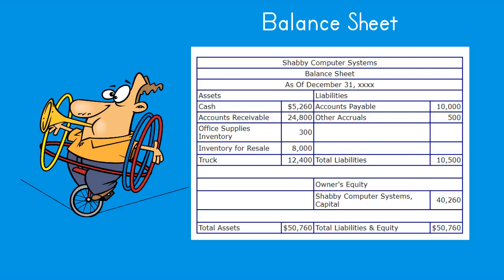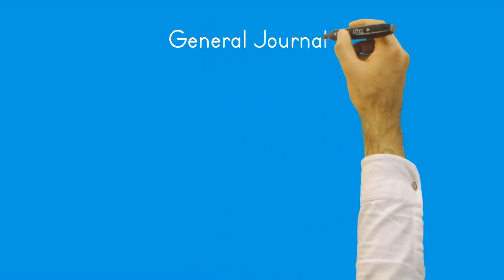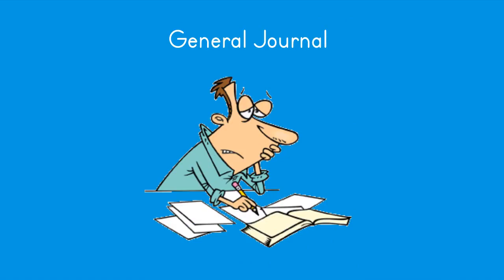After all closing entries have been posted, the only accounts that have a balance are balance sheet accounts — assets, liabilities, and equity. General journal finishing touches: we've been using worksheets as an aid for recording adjusting and closing entries. It's time to use this information to prepare and record these entries in the formal general journal and post the general journal entries to the formal general ledger and any subsidiary ledgers. The information for adjusting entries comes from the adjusted trial balance worksheet, and the information for closing entries comes from the after-closing trial balance worksheet.